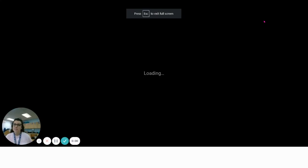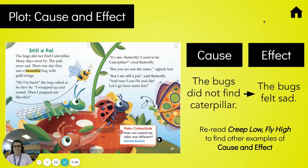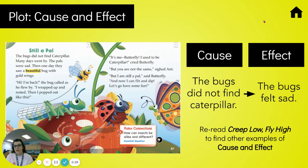Hey first grade, let's do our reading lesson for the day. We are still talking about insects and today is day three. First, let's talk about plot — the cause and effect. The cause is why something happens, and the effect is what happens because of the cause.